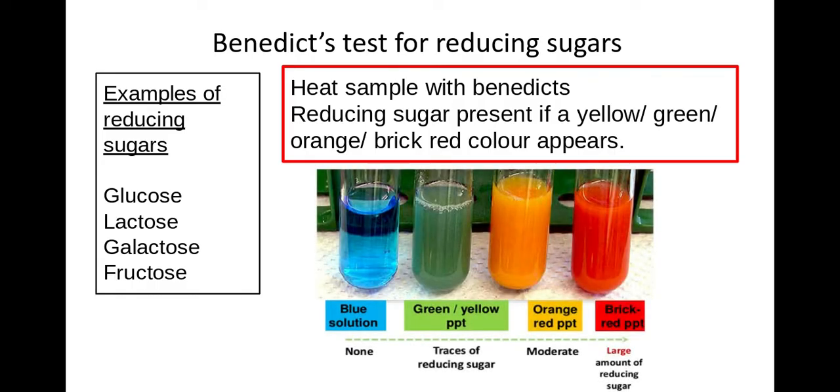So for example if there is no reducing sugar present the solution will stay blue which is the colour of the Benedict's solution. If I have a low concentration of reducing sugar I'll get a greeny yellow solution.